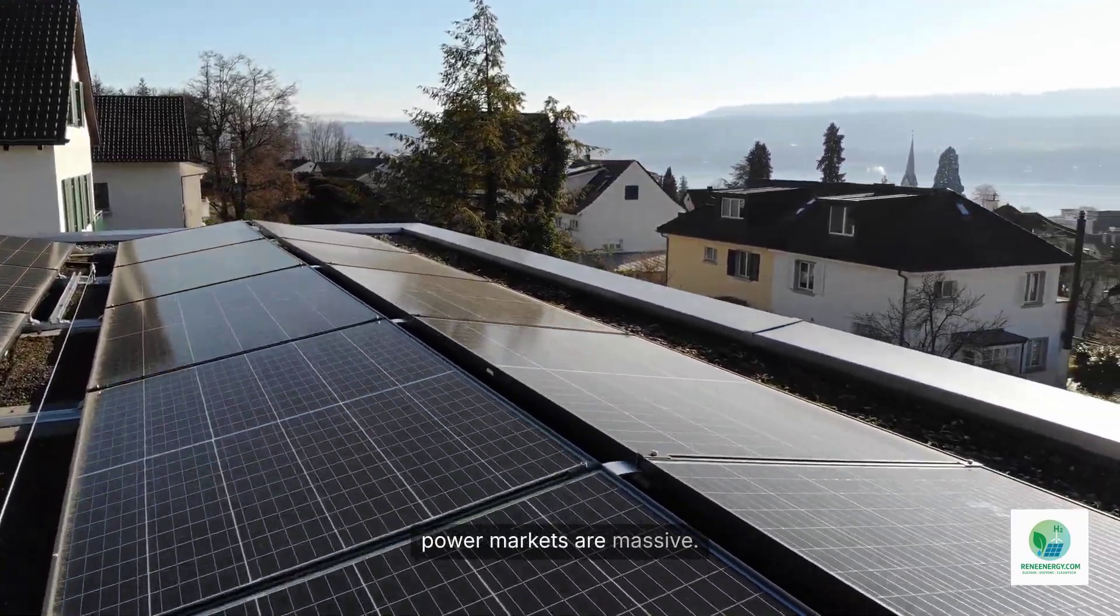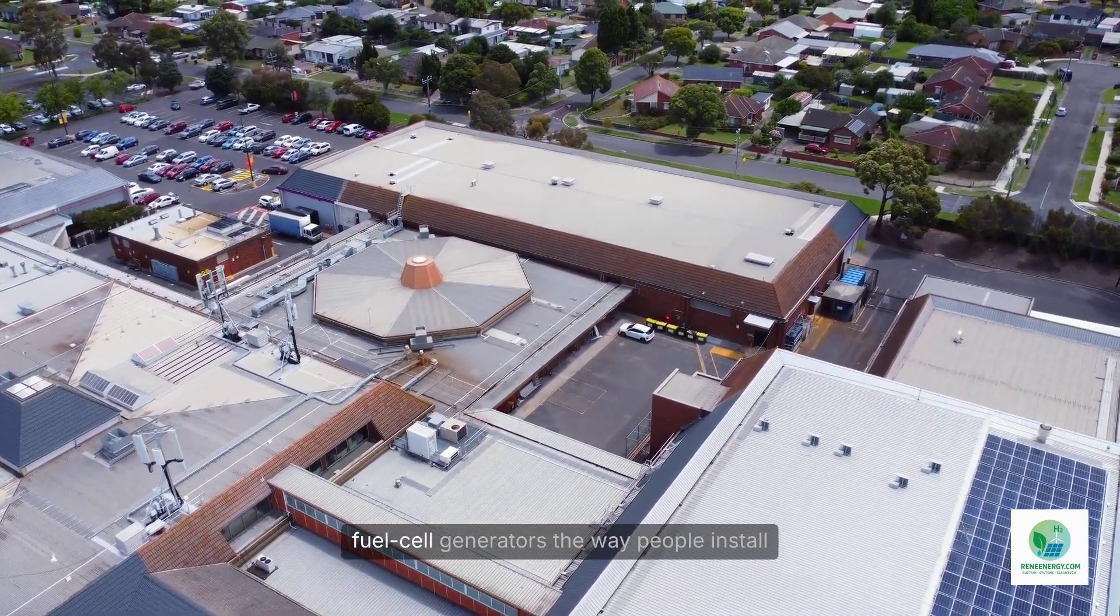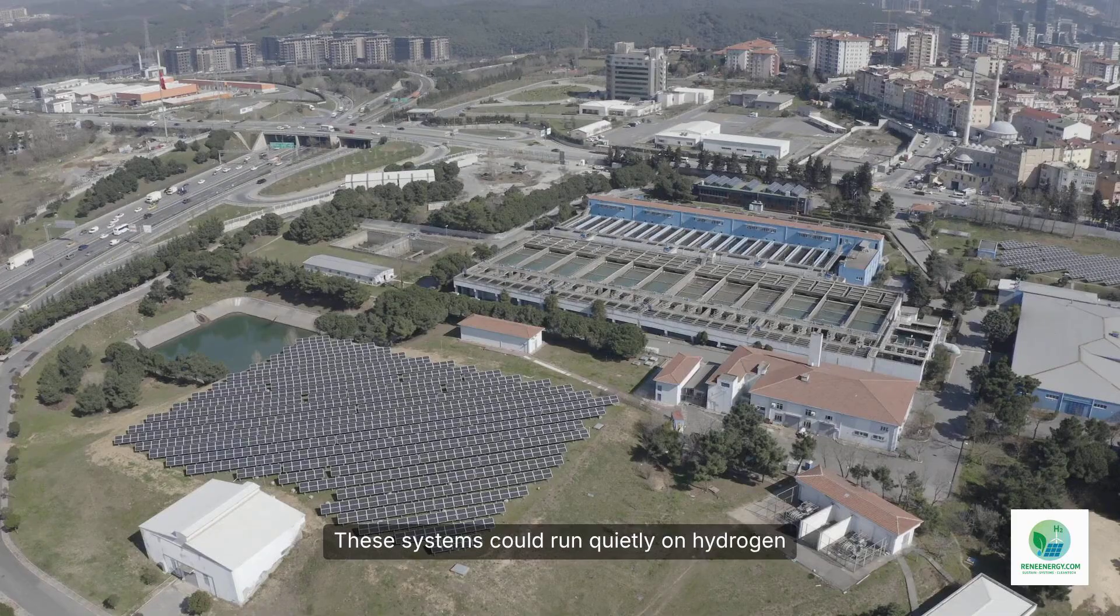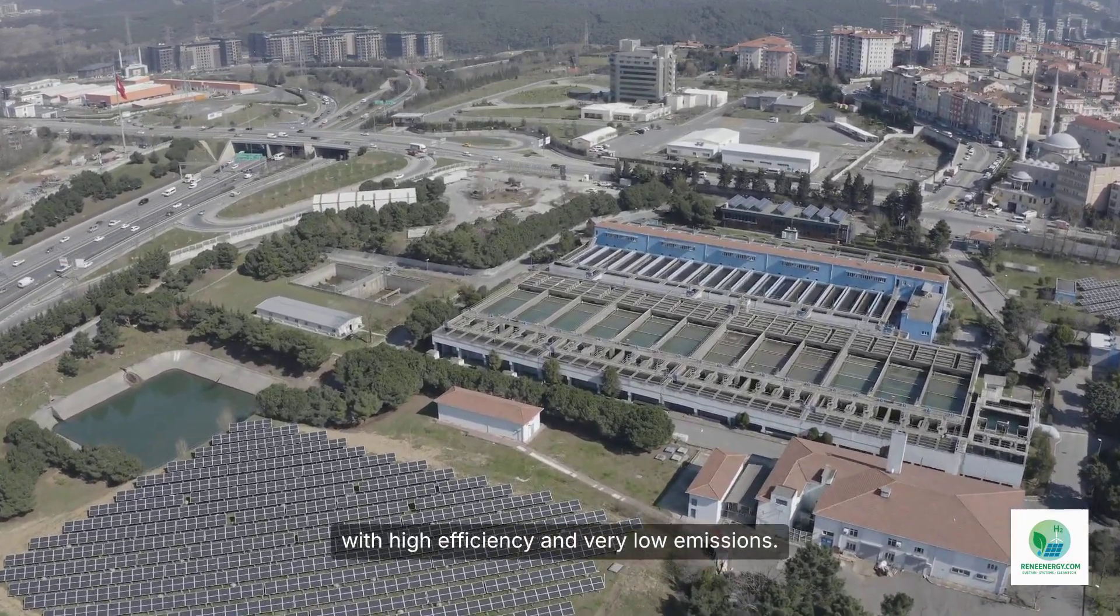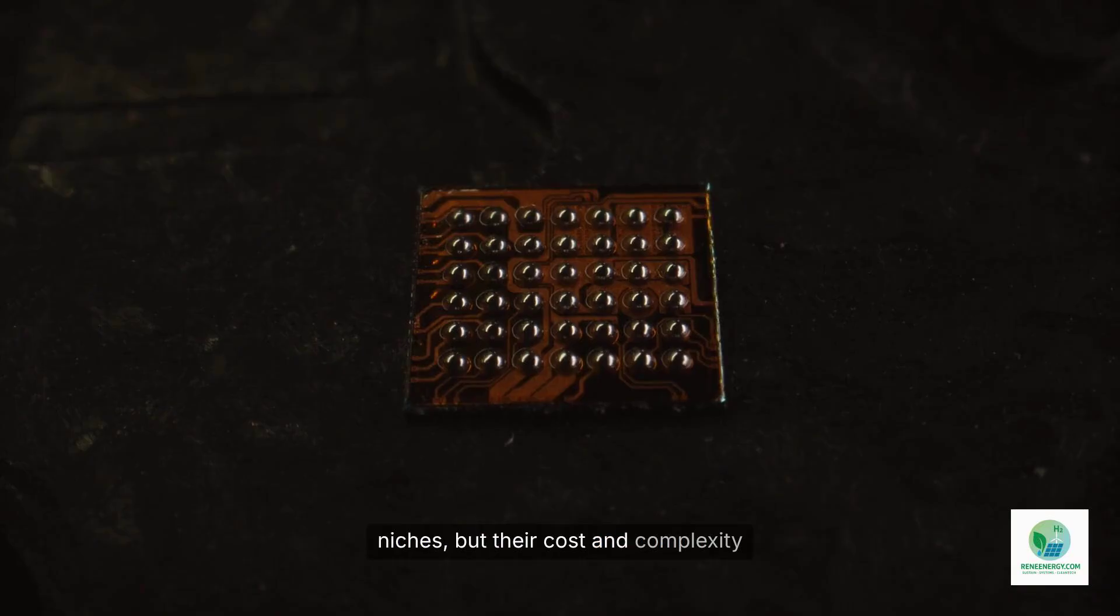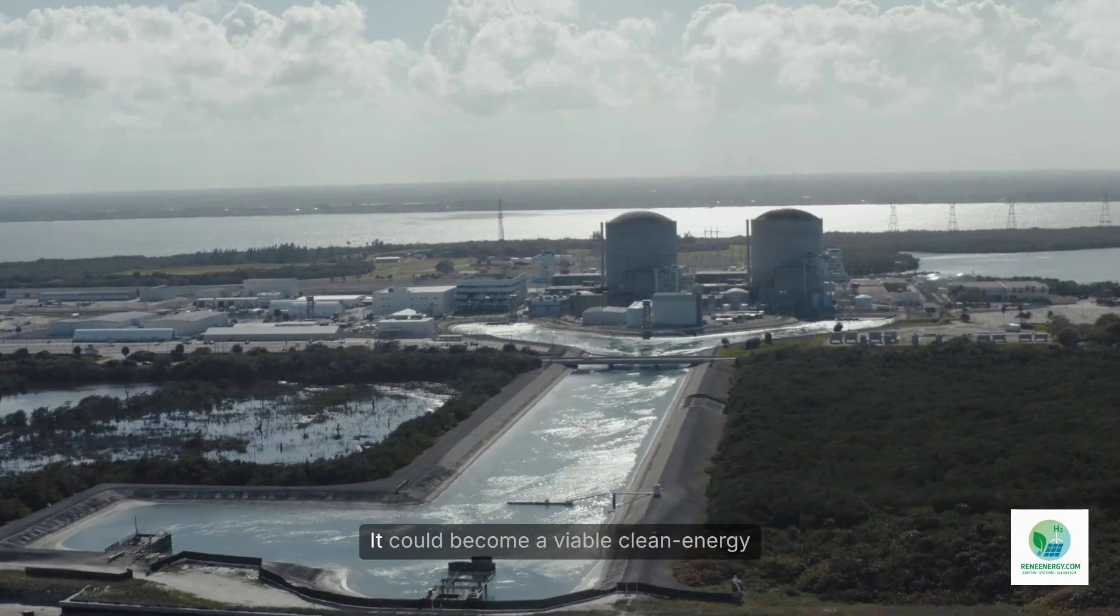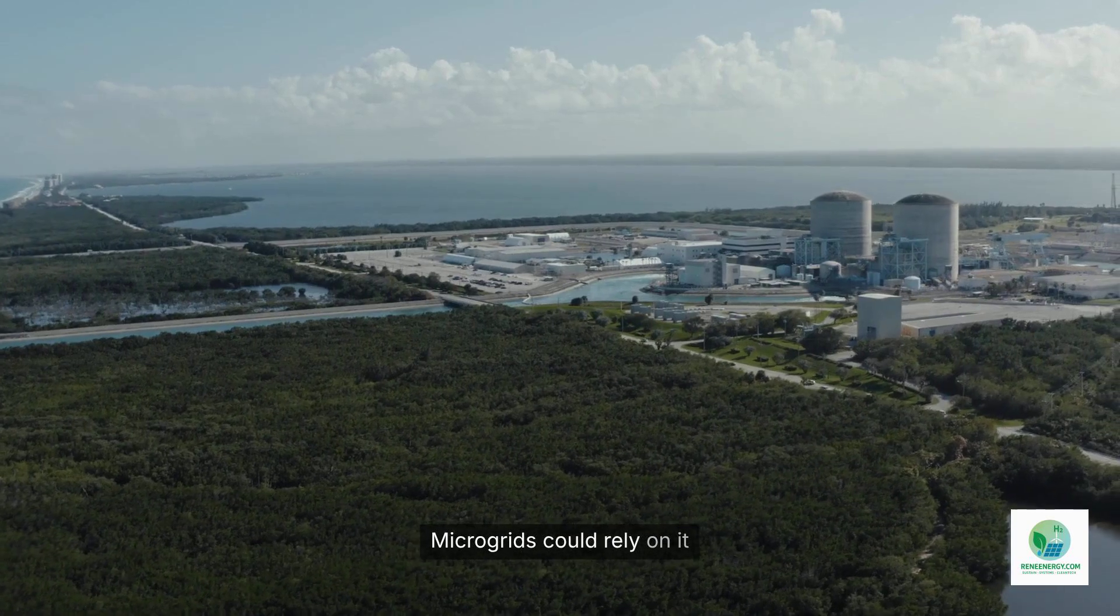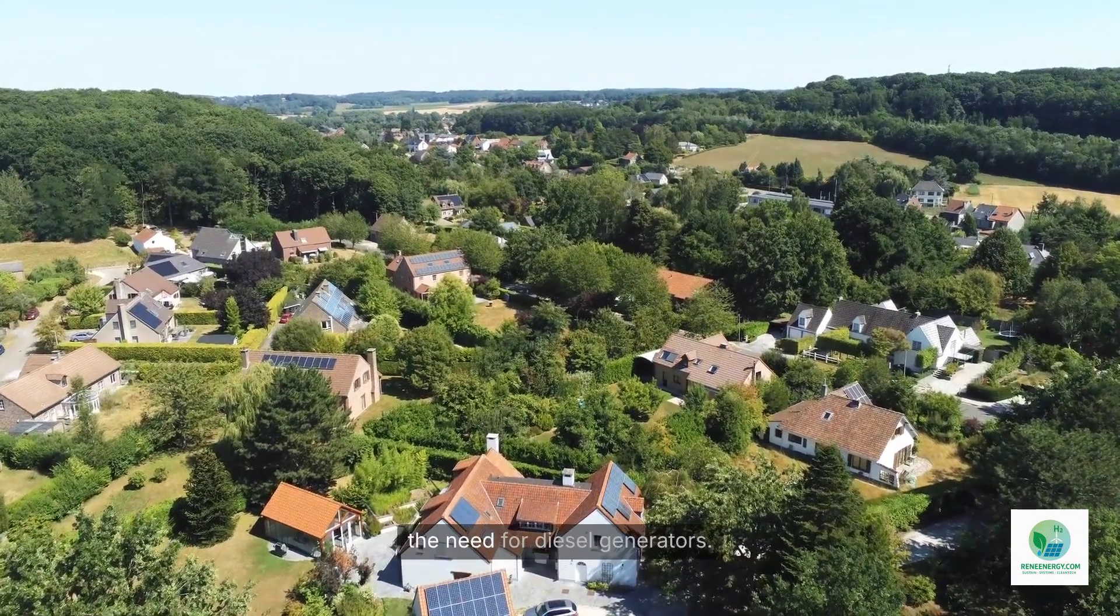The implications for stationary power markets are massive. Imagine a world where homes, apartment buildings, and businesses can install fuel cell generators the way people install heat pumps or electric water heaters. These systems could run quietly on hydrogen or ammonia, providing electricity and hot water with high efficiency and very low emissions. Today's SOFCs already do this in limited niches, but their cost and complexity make them difficult to scale. A 300-degree fuel cell changes the economics entirely. It could become a viable clean energy appliance for distributed power. Microgrids could rely on it as a clean, firm power backbone. Remote communities could run on hydrogen-powered systems without the need for diesel generators.